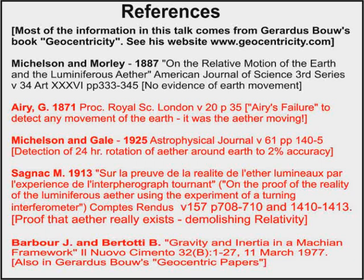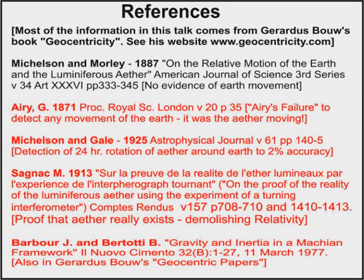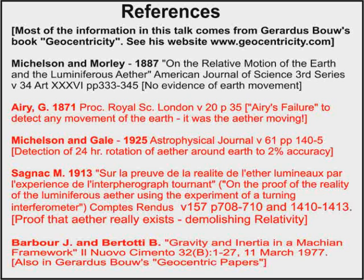1. The Michelson-Morley experiment, that showed that the Earth was not travelling around the Sun at 30 km per second. 2. The Michelson-Gale experiment, that demonstrated that the aether was passing across the face of the Earth at one rotation per day. 3. The Aries failure experiment, that proved that the Earth was stationary and that it was the starlight that was revolving around us. And 4. The Sagnac experiment, which proved that the aether really did exist, and this demolished Einstein's theory of relativity.